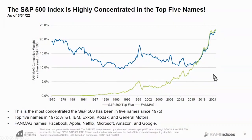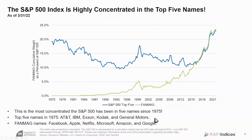23% in five stocks — that's enormous. Way back in 1975, you had nearly 20% in the top five names: AT&T, IBM, Exxon, Kodak, General Motors — world-straddling colossi, not one of which is in the top 10 anymore. The top 10 changes. And the top 10 in today's market don't even have much in the way of dividends — most of them have none to cushion you if they fall from their perch.